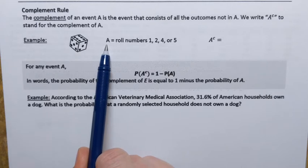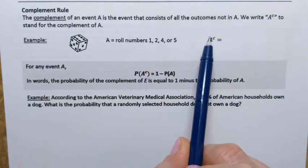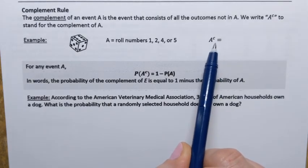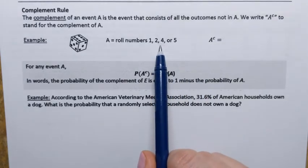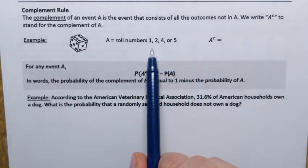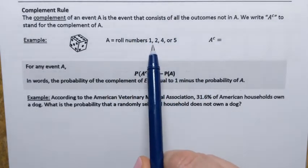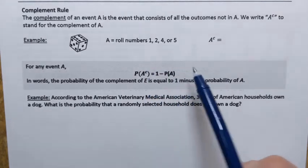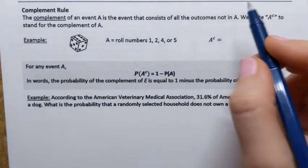What's going to be its complement? Its complement is going to be the event that has outcomes that are not in event A. Which outcomes are not included here? It looks like 3 and 6 are not included, so that means it's going to be the complement.